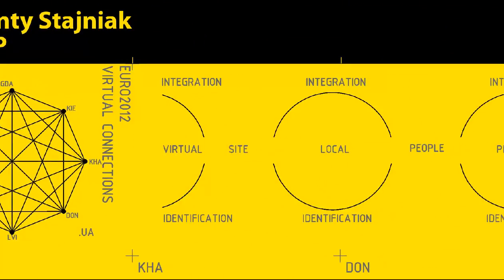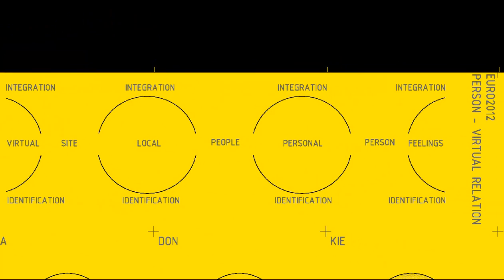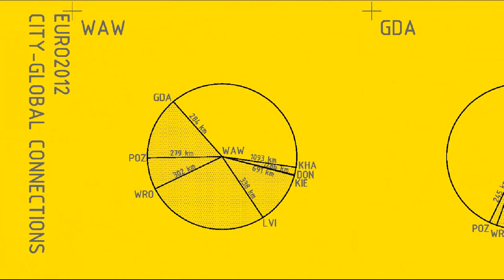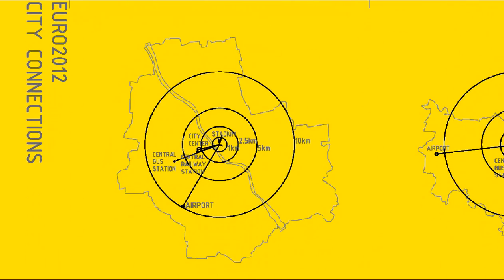Every object is related to different parameters which form the shape of the structure. Global city connections show connections with other cities and give direction for light illumination from the top of the structure to the city where the match is taking place.